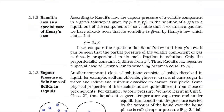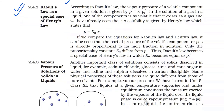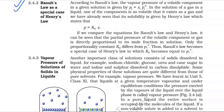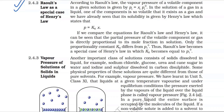2.4.2 Raoult's law as a special case of Henry's law. According to Raoult's law, the vapour pressure of a volatile component is Pi = xi·Pi°. In a solution of a gas in a liquid, one component is so volatile it exists as a gas, and its solubility is given by Henry's law: p = KH·x. Comparing the two equations, the partial pressure of the volatile component is directly proportional to its mole fraction in solution. The only difference is the proportionality constant — KH differs from P1°. Thus, Raoult's law becomes a special case of Henry's law in which KH equals P1°.